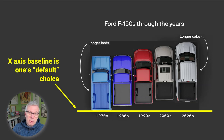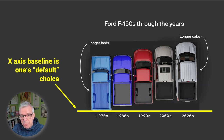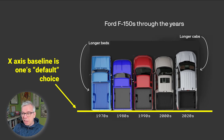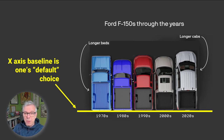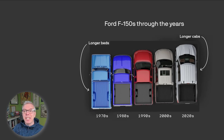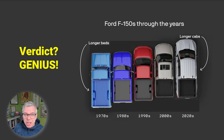Why is this cool? Because normally we think of our baselines being down at the bottom of the chart. But when you do that, it all kind of looks a bit aesthetically clunky, and the length of the cabs isn't obvious because the baselines are no longer standard for the cabs. So that's why we do the baseline this way. It's a genius chart.